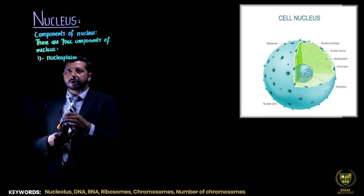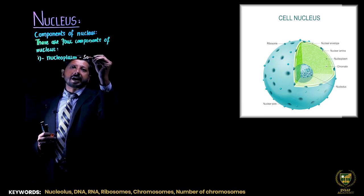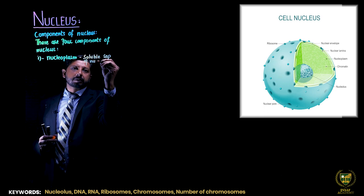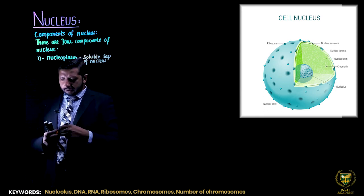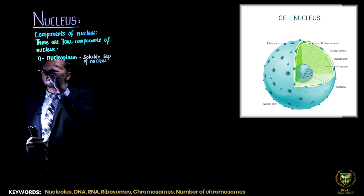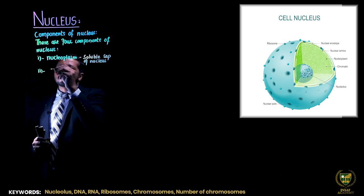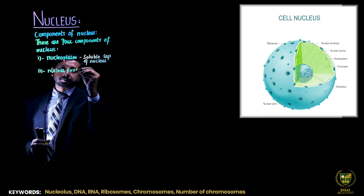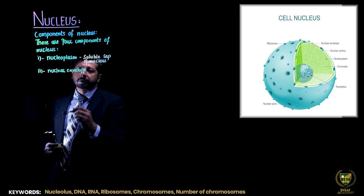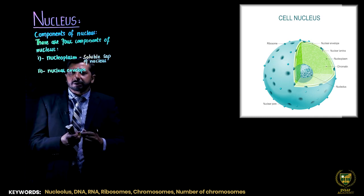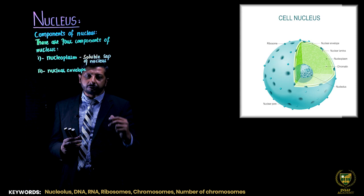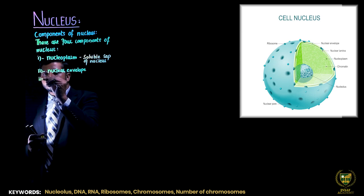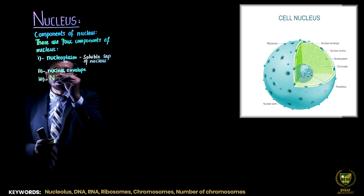Nucleoplasm consists of a soluble sap of the nucleus. Number two, we have discussed the nuclear envelope — with inner membrane and outer membrane, nuclear pores, their importance, their shapes. And now, number three — the important part — is the nucleolus.